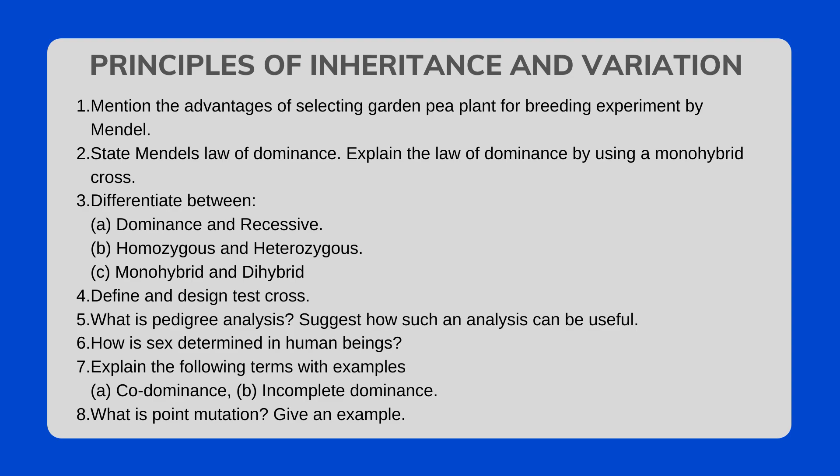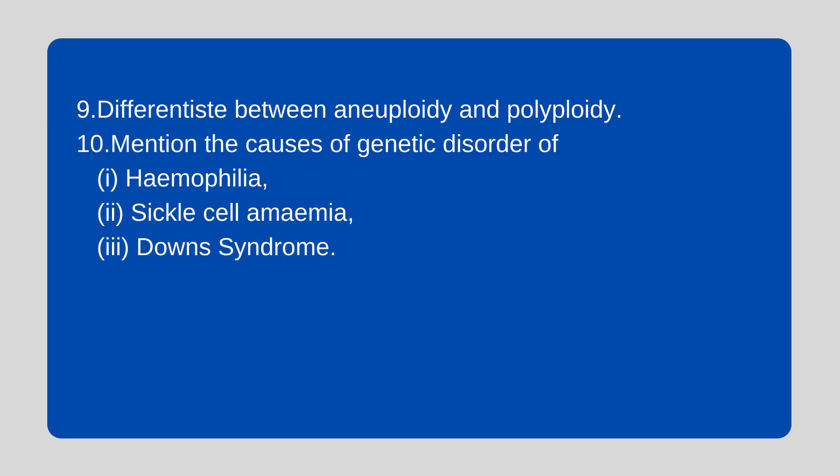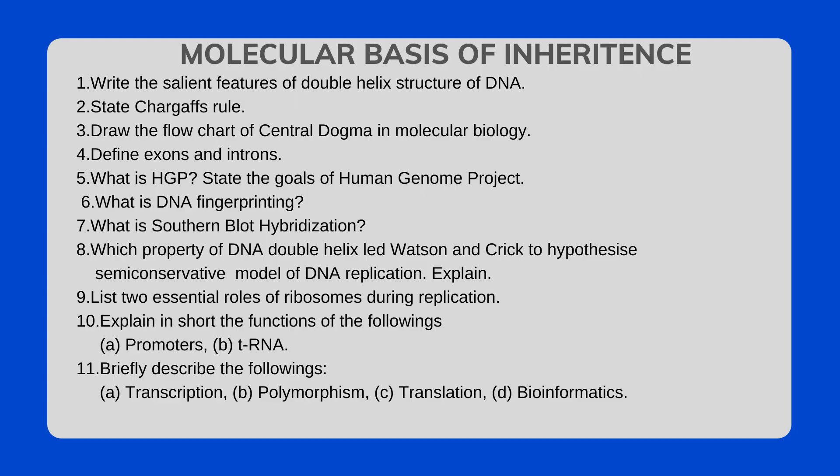What is test cross analysis? Suggest how such an analysis can be useful. How is sex determined in human beings? Explain the following terms with examples: co-dominance and incomplete dominance. What is point mutation? Give examples. Differentiate between aneuploidy and polyploidy. Mention the causes of genetic disorders: haemophilia, sickle cell anaemia, and Down syndrome.